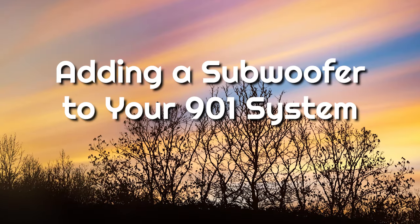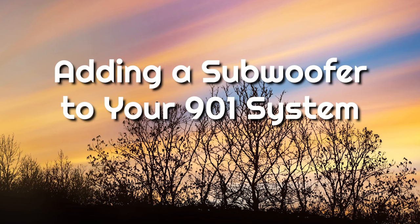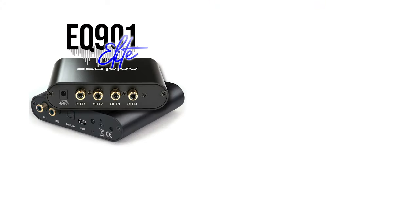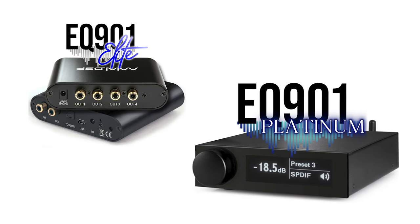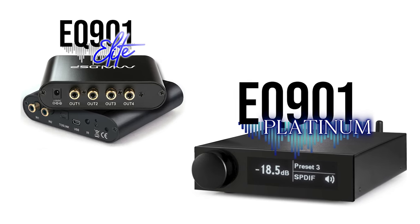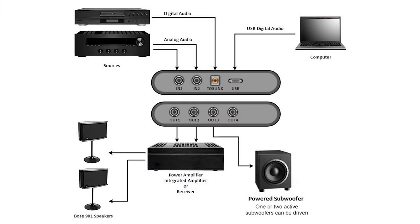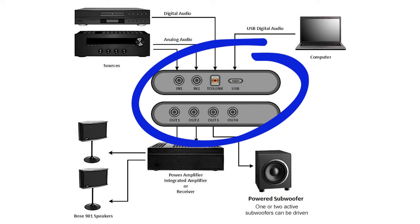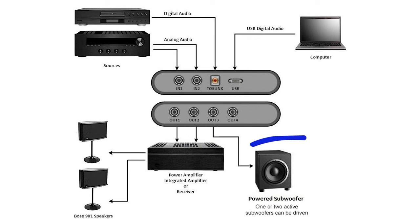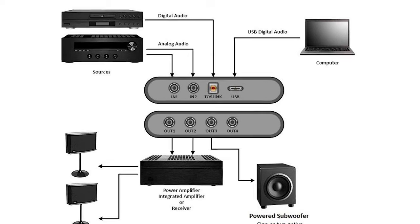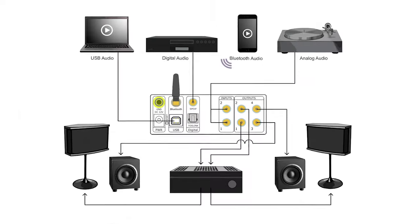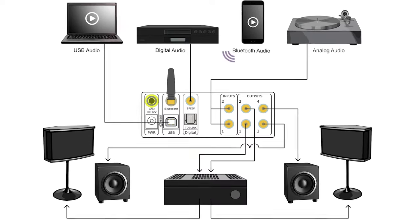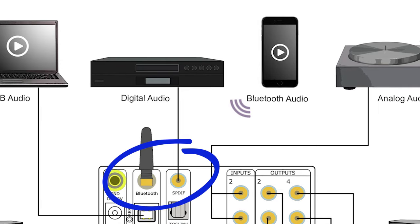The EQ901 subwoofer series is a turnkey solution created to seamlessly integrate the subwoofer into your 901 system. With the subwoofer option on the EQ901 Elite and EQ901 Platinum, you gain active high and low-pass crossovers along with the Bose 901 equalization curves. The EQ901 Elite with subwoofer option is a complete solution for properly adding a subwoofer to your Bose 901 system, and you also have the option of connecting Toslink Optical from your TV. The EQ901 Platinum with subwoofer option acts as a fully functional system preamplifier, equalizer, and active crossover, and additionally gives you high-definition Bluetooth and digital inputs.